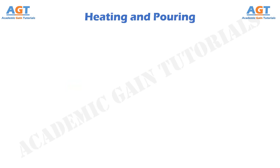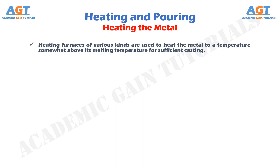When we say casting, it involves heating the metal to melt it and pouring the molten metal into the mold cavity before letting it to freeze. So, when we are discussing heating and pouring, we should start with heating the metal. Heating furnaces of various kinds are used to heat the metal to a temperature somewhat above its melting temperature for sufficient casting.